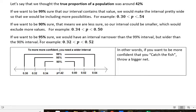And then in between is the 95%. So we would have a narrower interval than the 99%, but wider than the 90%. And so maybe we'd have an interval from 0.32 to 0.52. And I just made these numbers up just to illustrate the idea.